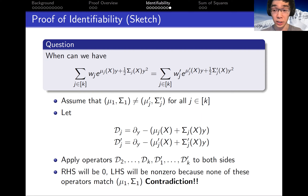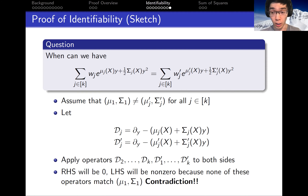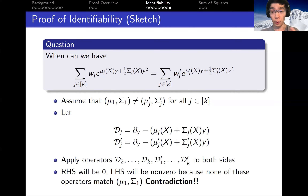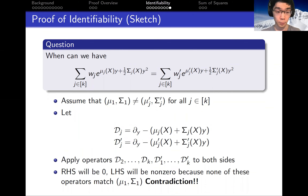Of course there are many more details needed to make this proof quantitatively robust, including the fact that we can only measure a constant number of Hermite moments rather than all of them, but I won't have time to go into those details in this talk.